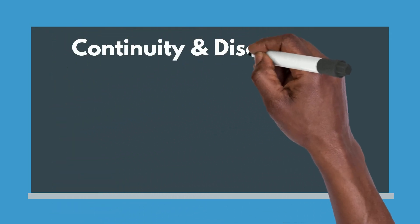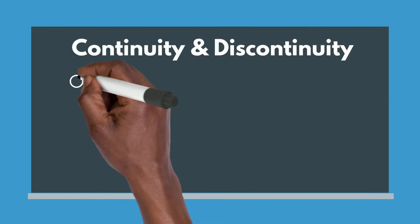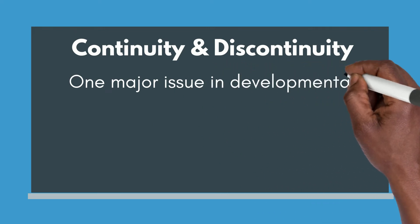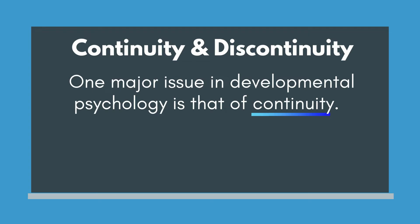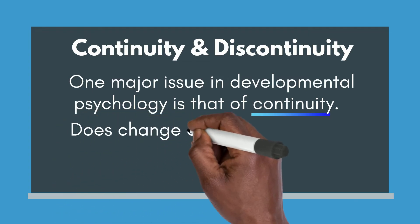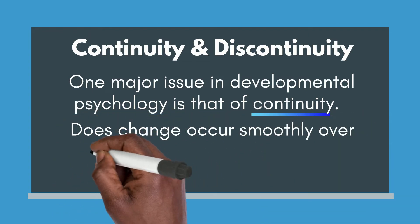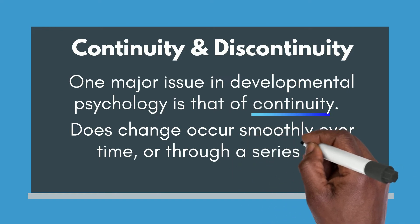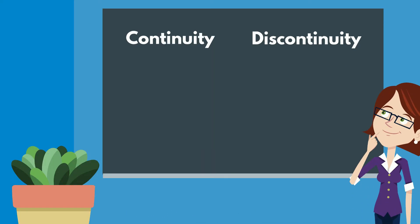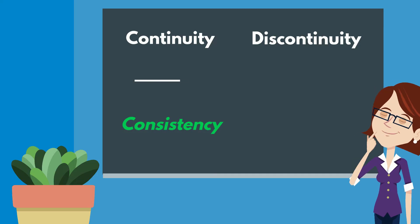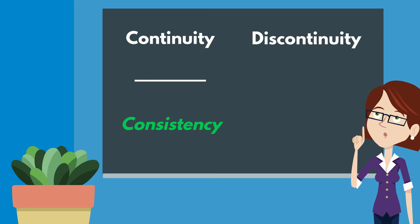Continuity vs. Discontinuity: One major issue in developmental psychology is that of continuity. Does change occur smoothly over time, or through a series of predetermined steps? When considering skill development or personality characteristics over time, you can think of continuity as consistency of these skills or characteristics, and discontinuity as change in these skills or characteristics.